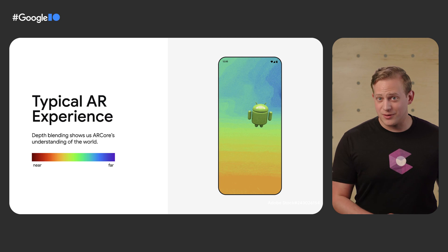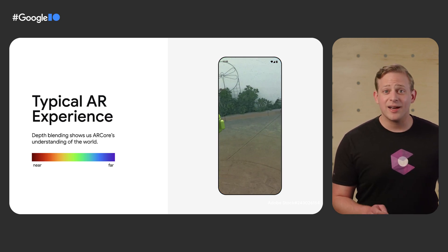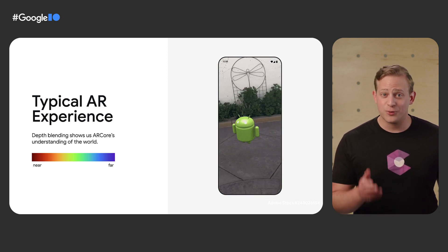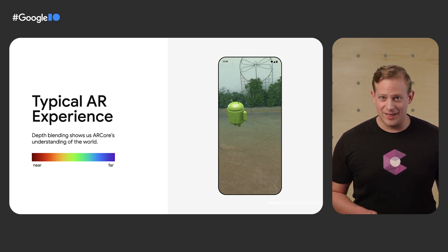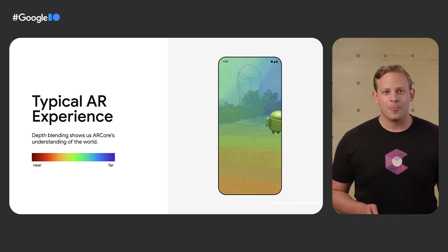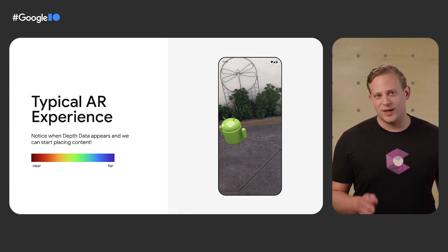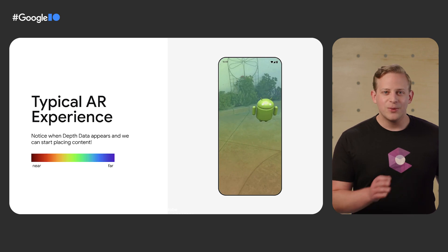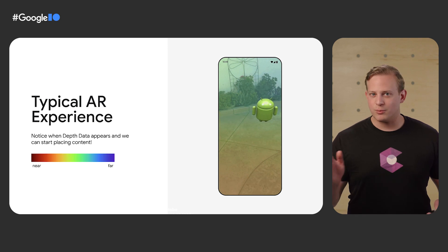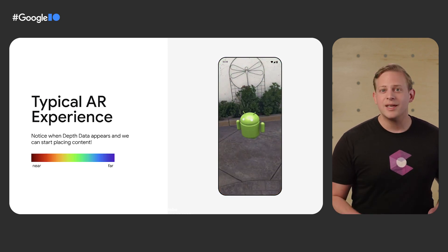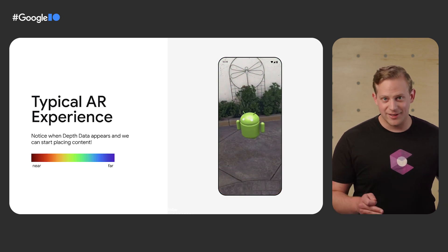ARCore needs environmental understanding — estimated geometry of the scene in front of you — to let you place content using our hit test APIs. These APIs let you raycast into the scene to find detected geometry for placing your content. Here, we're using the recent depth hit test API, which uses depth data to place content. We can see that we go from dim colors when we have no depth available, to a range of colors going from orange to green for near to far, telling us that we have usable depth data. Once these colors show up, we're ready to jump into the experience.